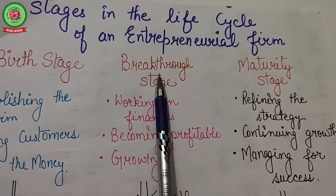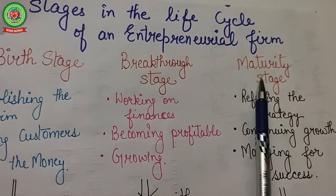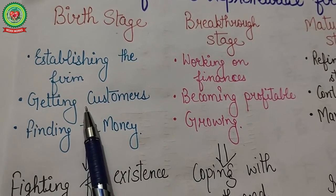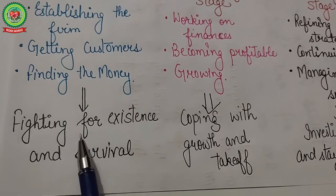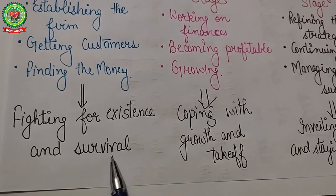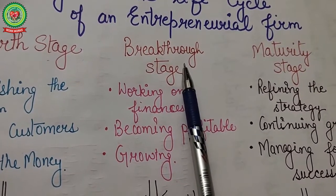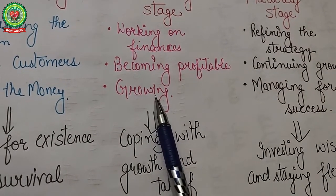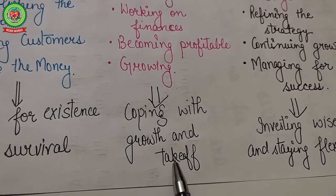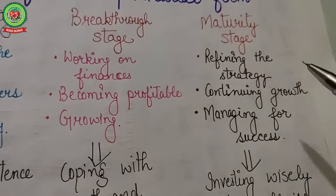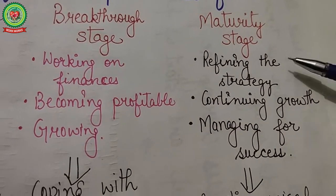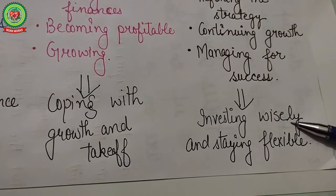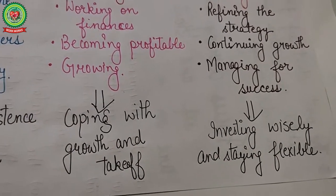The stages in the life cycle of an entrepreneurial firm are: the birth stage, the breakthrough stage, and the maturity stage. In the birth stage, the objectives are establishing the firm, getting customers, and finding money; the main challenge is fighting for existence and survival. In the breakthrough stage, the objectives are working on finances, becoming profitable, and growing; the challenges are coping with growth and takeoff. In the maturity stage, the objectives are refining strategy, continuing growth, and managing for success; the challenges are investing wisely and staying flexible.